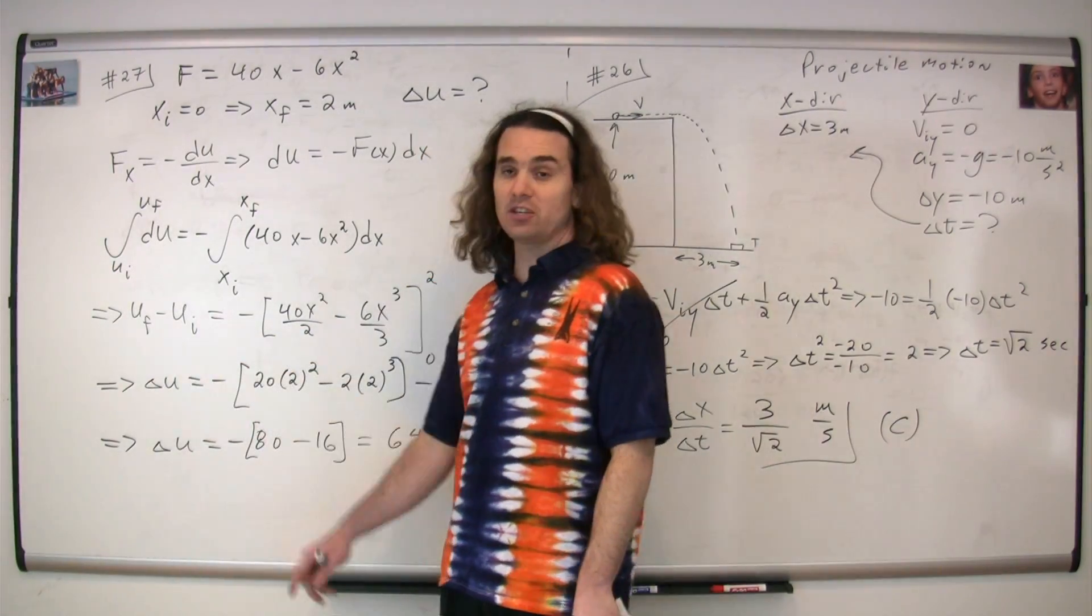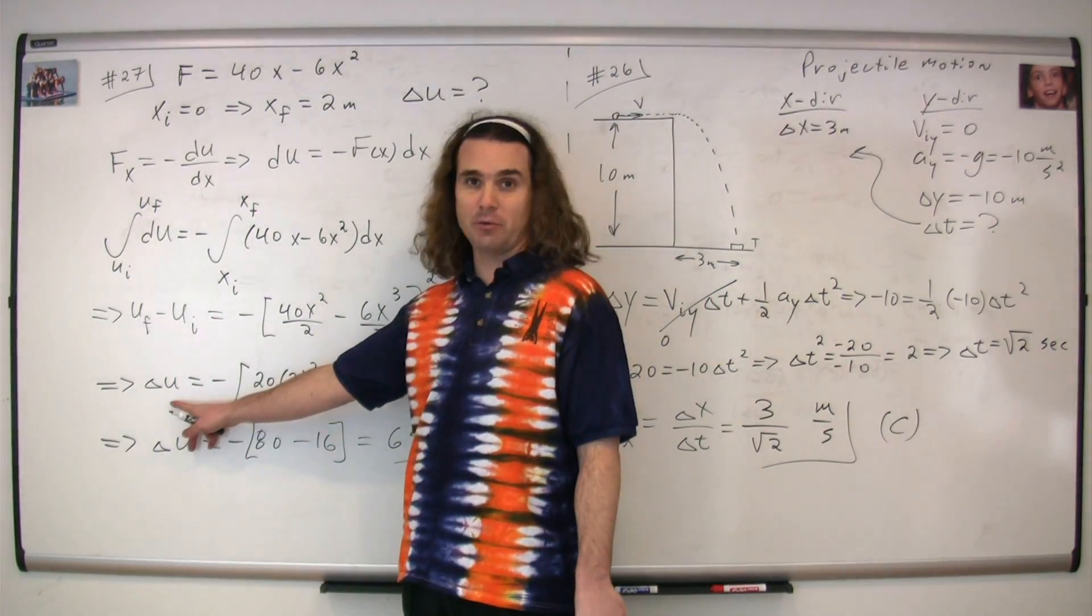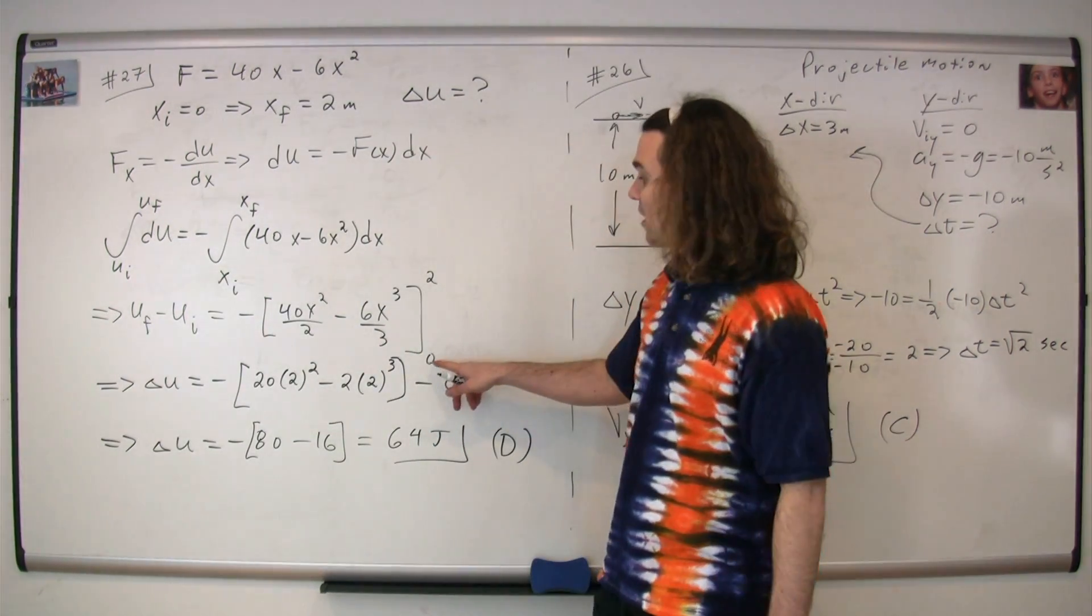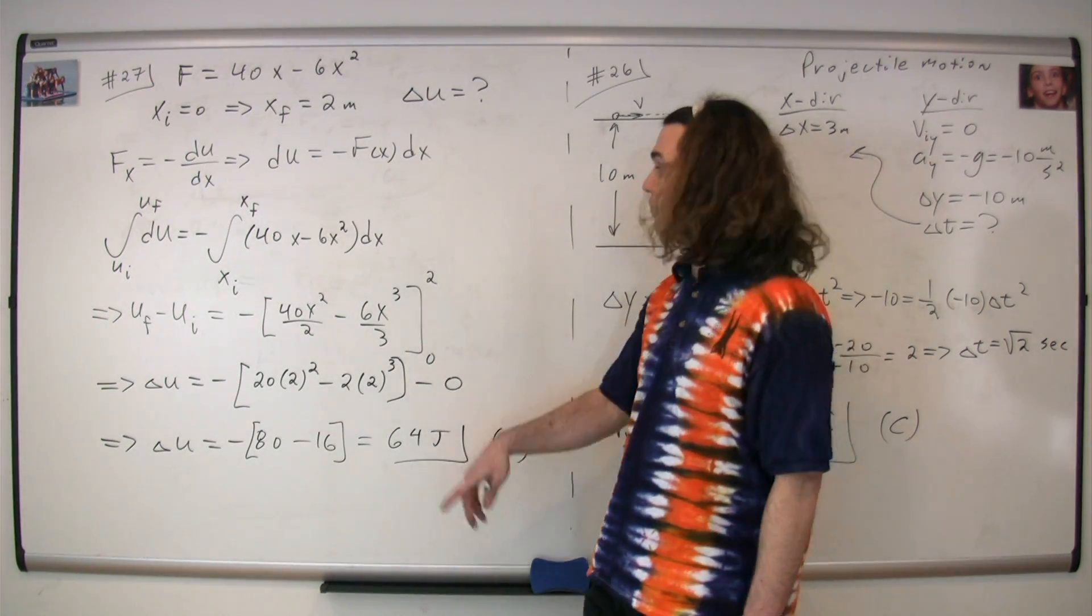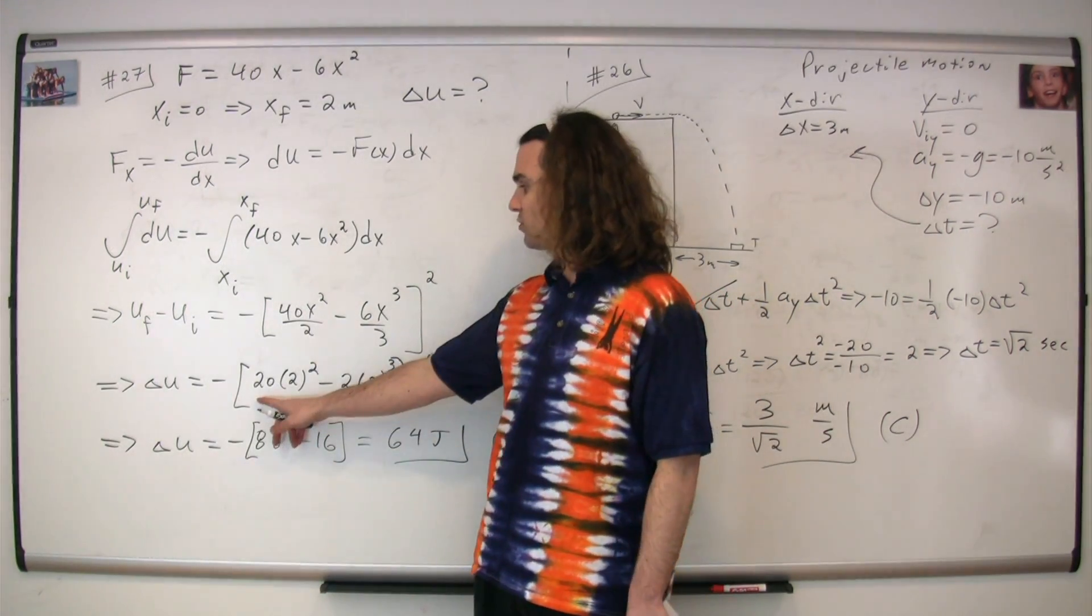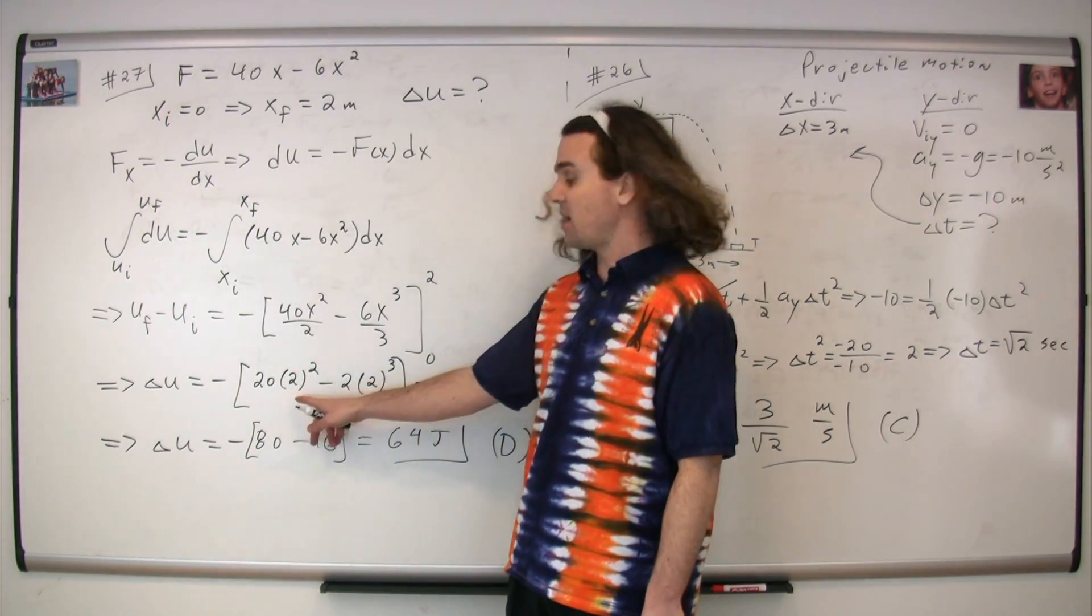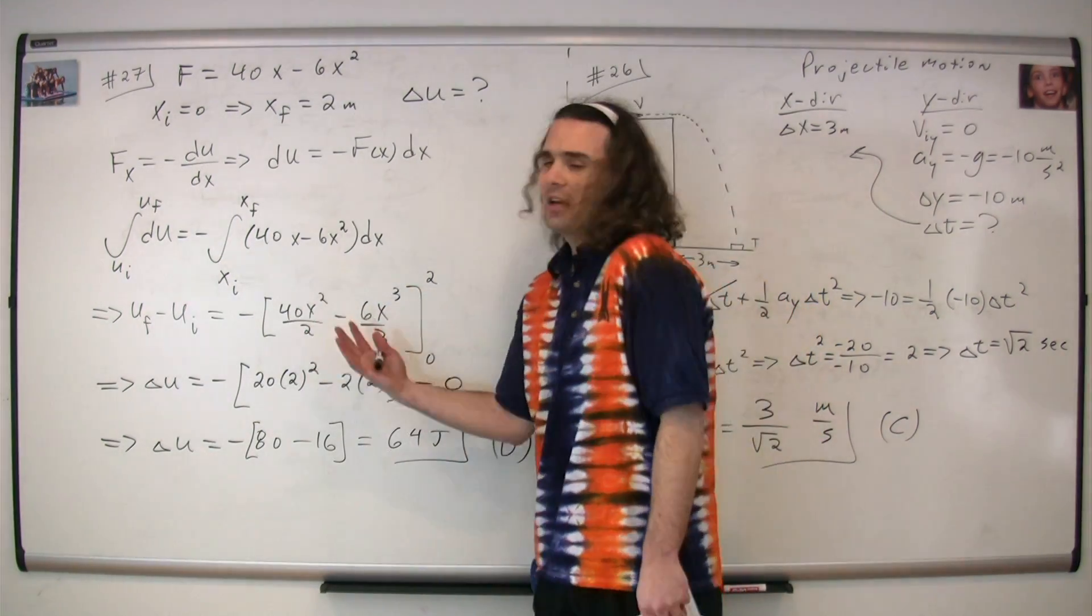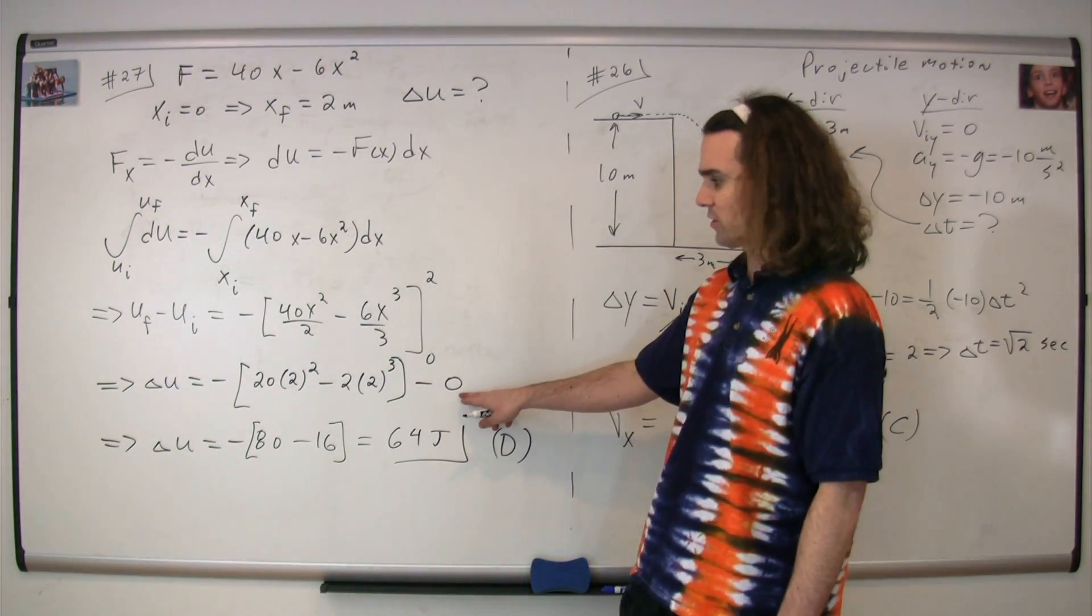The final potential energy minus the initial potential energy works out to be the change in potential energy, which is what we're trying to find. And we can now substitute in our initial and our final values for our position. So we get negative of the quantity 20 times 2 squared minus 2 times 2 cubed minus, and if you substitute zero into this, you get zero for the whole thing, so I'll put minus zero.